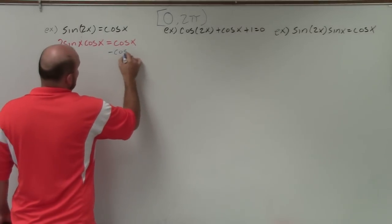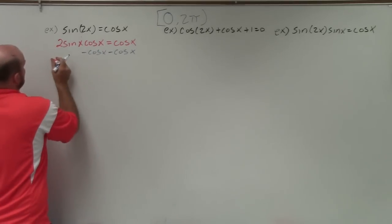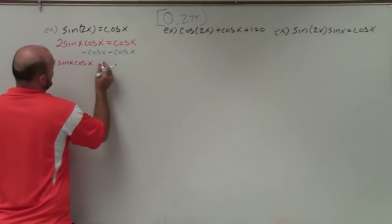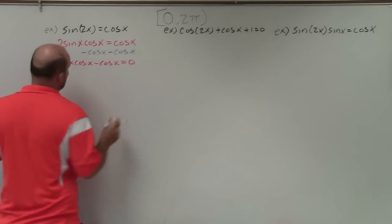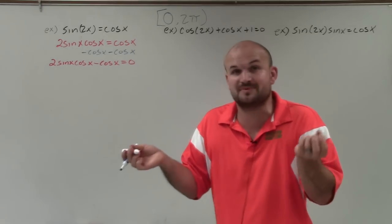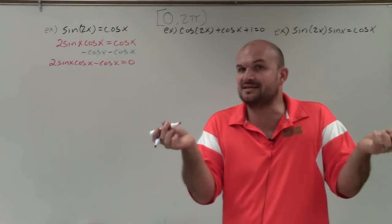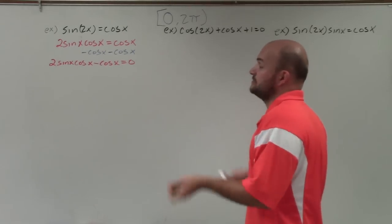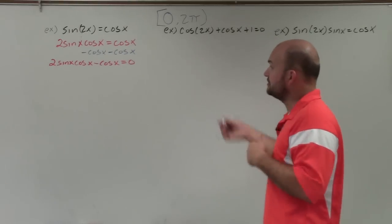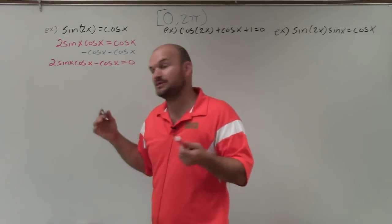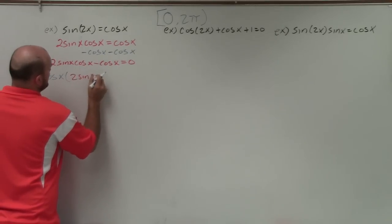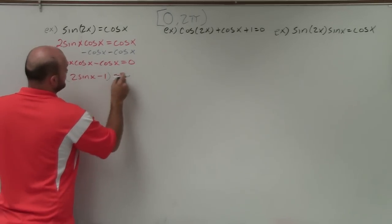I'll subtract cosine of x on both sides, and I obtain 2 sine of x cosine of x minus cosine of x equals 0. I can't just use inverse operations because I have sines and cosines, which are not like terms. So I need factoring. Looking at this binomial, both terms have a cosine of x in common, so I factor out a cosine of x. When factoring out cosine of x, I'm left with cosine of x times the quantity 2 sine of x minus 1 equals 0.